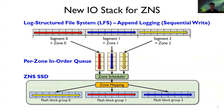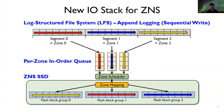For ZNS, we need to revise two major IO stack components: the file system and the IO scheduler. First, the in-place updating file system, such as ext4, must be replaced with append-logging file systems to eliminate random updates. Because a segment of LFS is written sequentially by append-logging, each segment can be mapped to one or more zones. Second, the IO scheduler must guarantee in-order write request delivery for a zone by using an in-order queue for each zone.